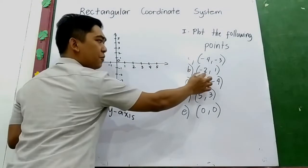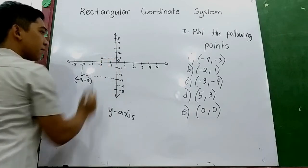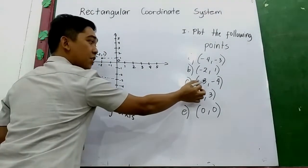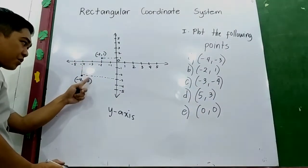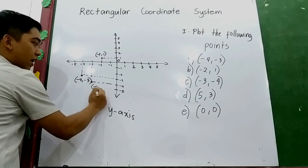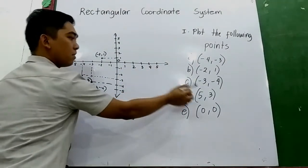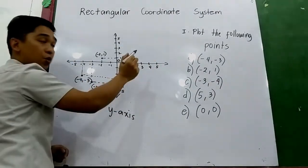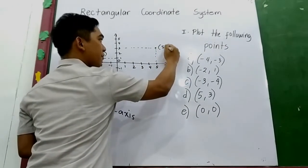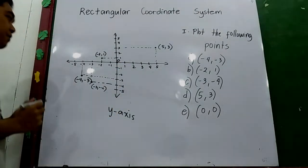Next, B is negative 2, positive 1. Then C: negative 3, negative 4. Then D: 5, 3 — going 1, 2, 3, 4, 5 on the x-axis, then up 3. And E is 0, 0, so it is at the origin. So easy, right?